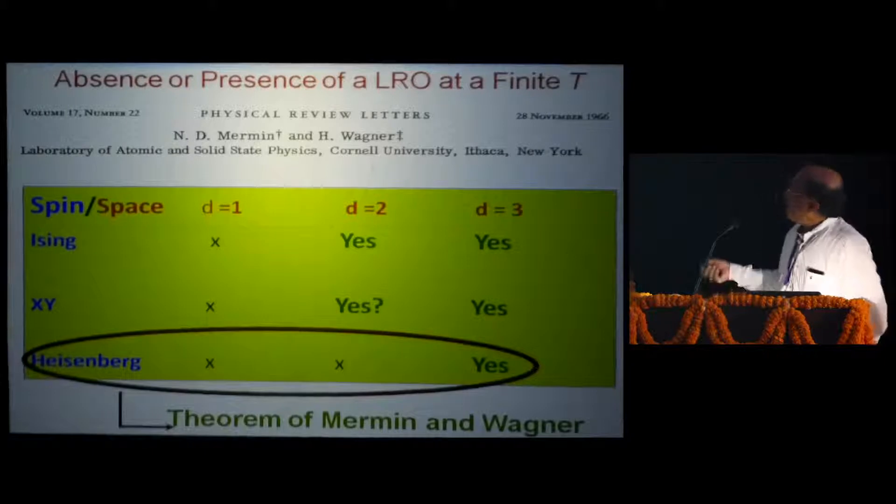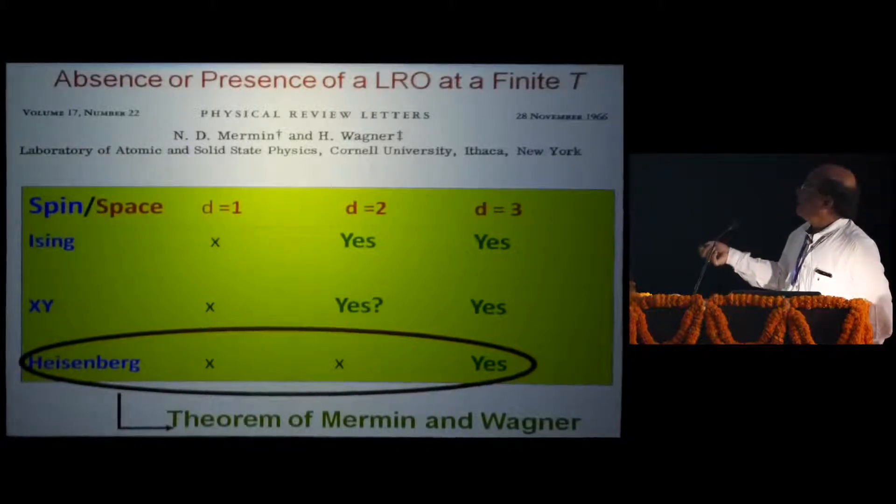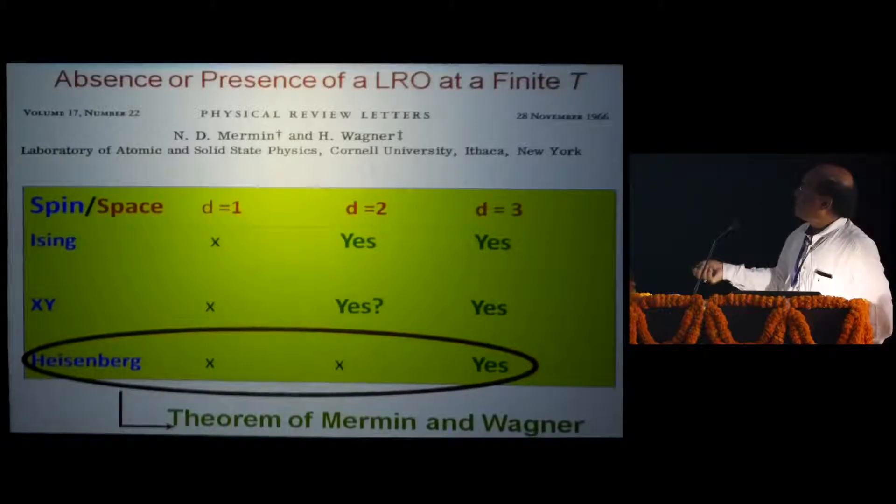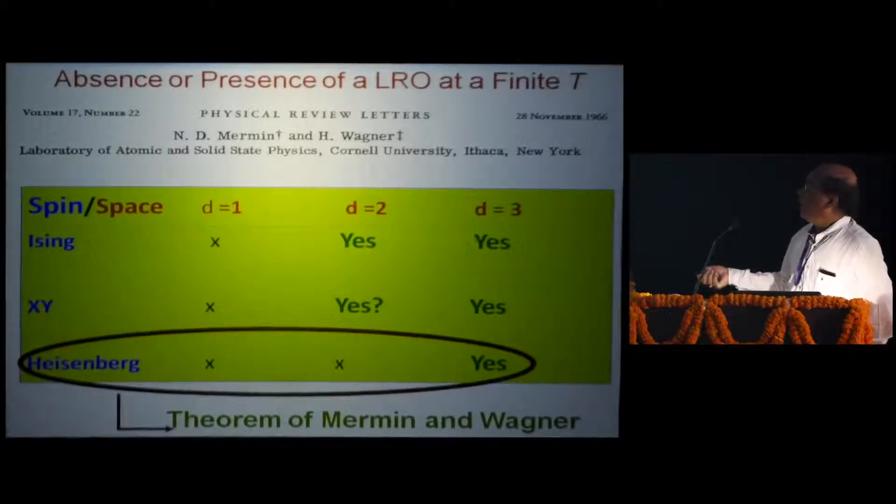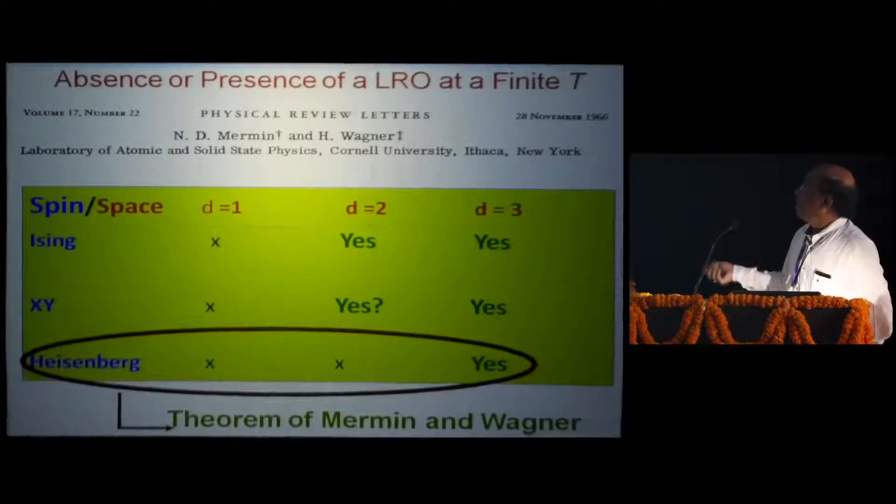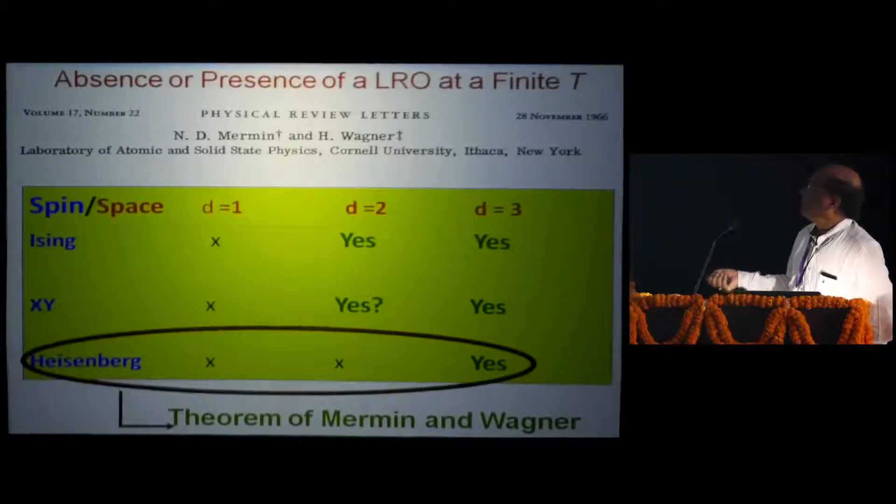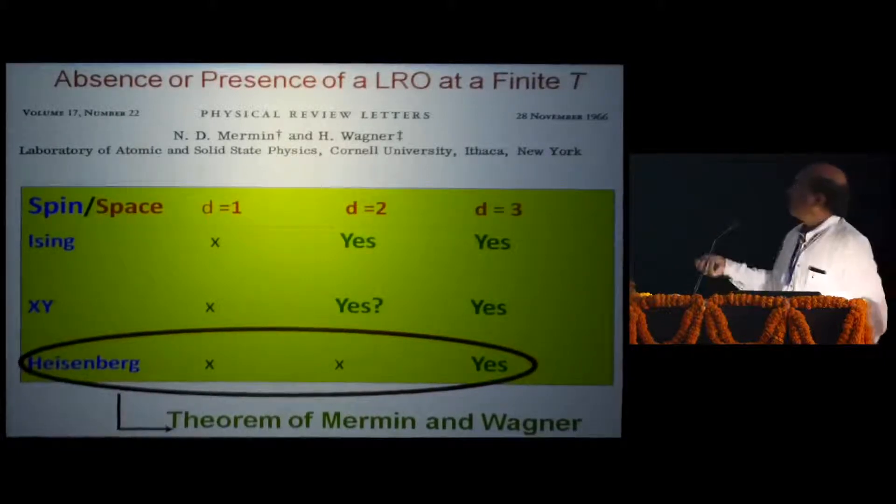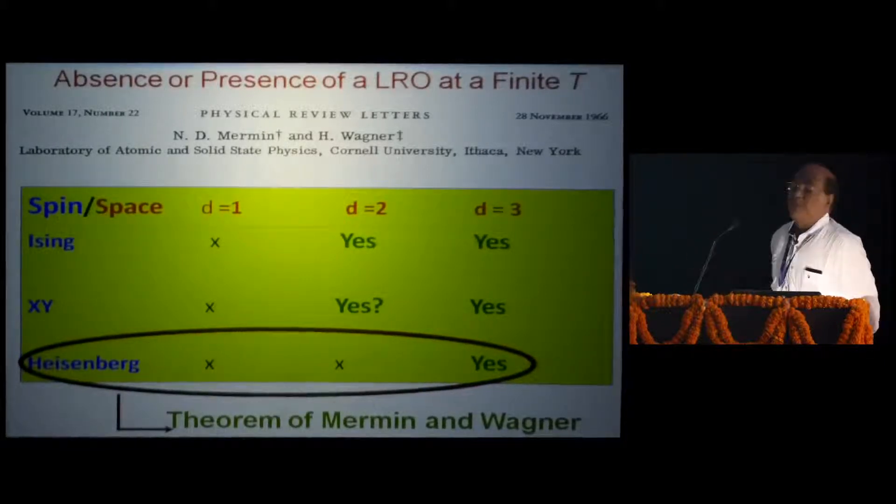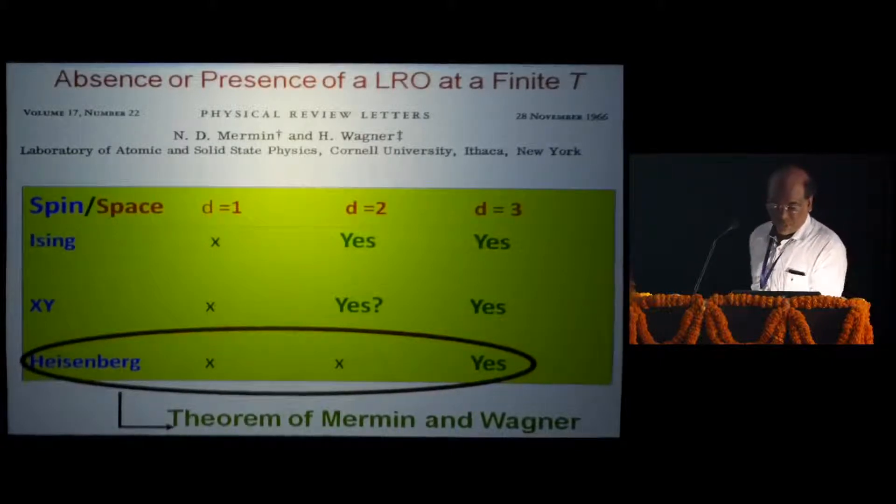There is a very famous theorem by Mermin and Wagner, which was given for Heisenberg spin, that there cannot be any long-range magnetic ordering if the spin dimensionality is less than three. Only for three-dimensional space spin dimensionality, for Heisenberg spin where you have all three components, there can be ordering. This table can be filled for other spin and space dimensionality.